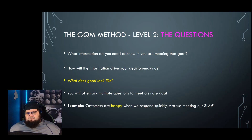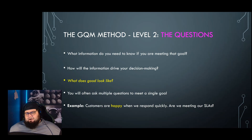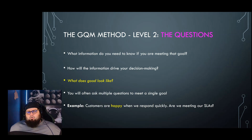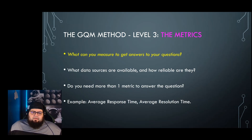When something comes in that we think is ransomware, are we able to isolate the system? Are we able to start incident response quickly and efficiently? That leads to a more secure customer long-term versus taking hours to respond, giving a bad actor time to get a persistent hold. That's what I mean by questions — what outcomes need to occur for your goal to be achieved?